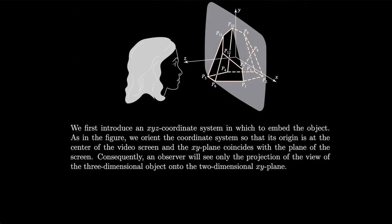We first introduce an XYZ coordinate system in which to embed the object. As in the figure, we orient the coordinate system so that its origin is at the center of the video screen and the XY plane coincides with the plane of the screen. Consequently, an observer will see only the projection of the three-dimensional object onto the two-dimensional XY plane.